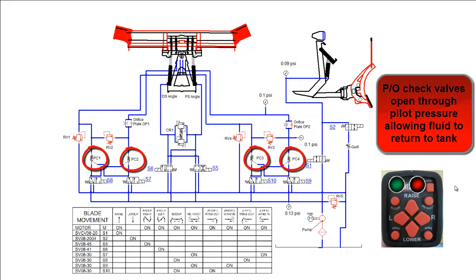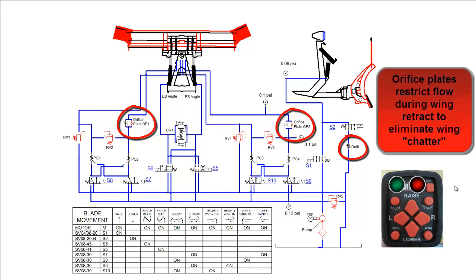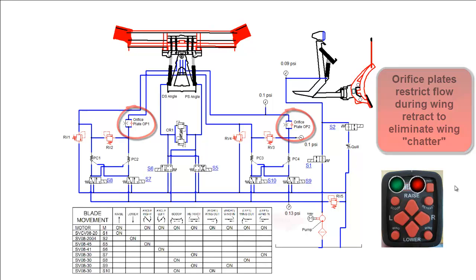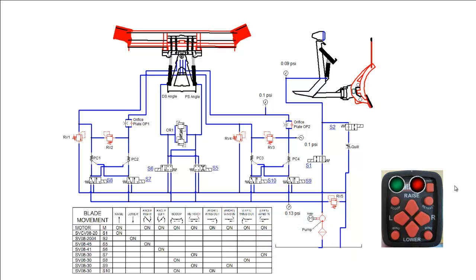There are 4 pilot operated check valves, which are labeled PC1 to PC4. There is also a quill and 2 orifice plates, which are labeled OP1 and OP2. Lastly, there is a motor, pump, filter, and reservoir, which is commonly referred to as tank throughout this video demonstration.